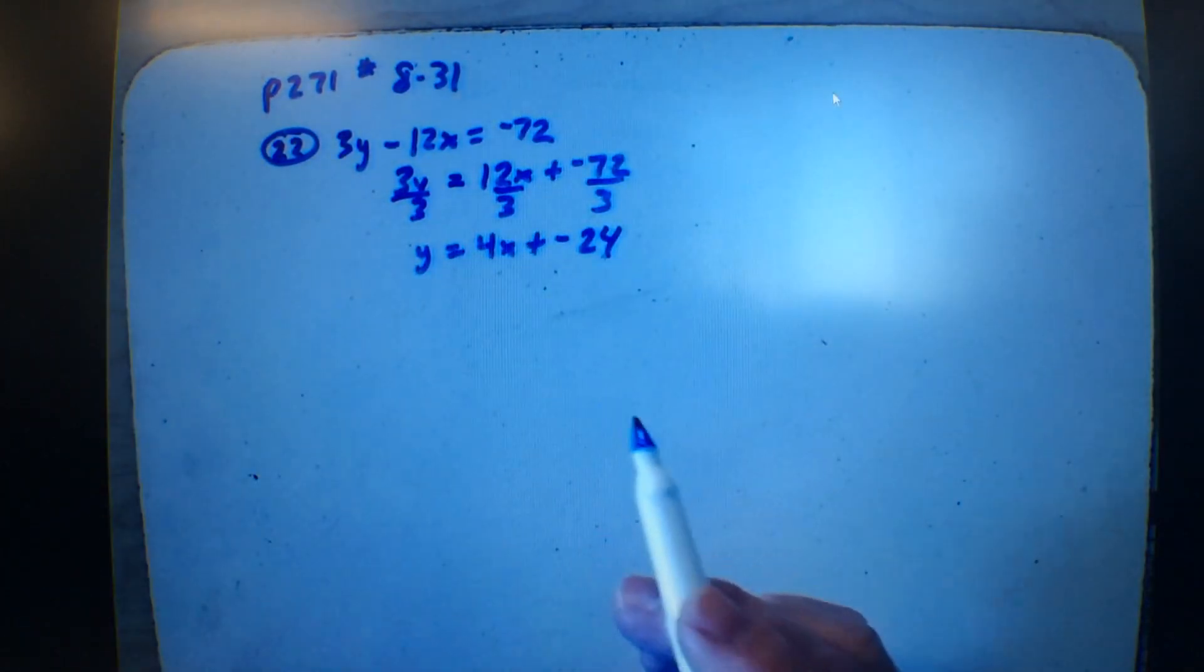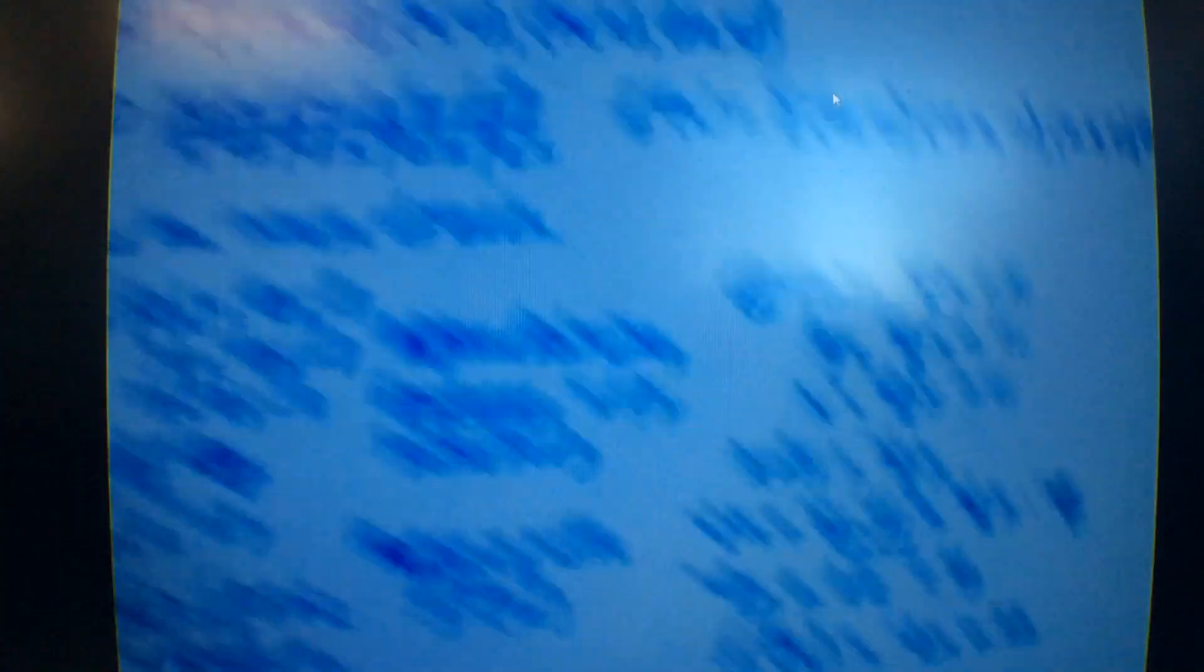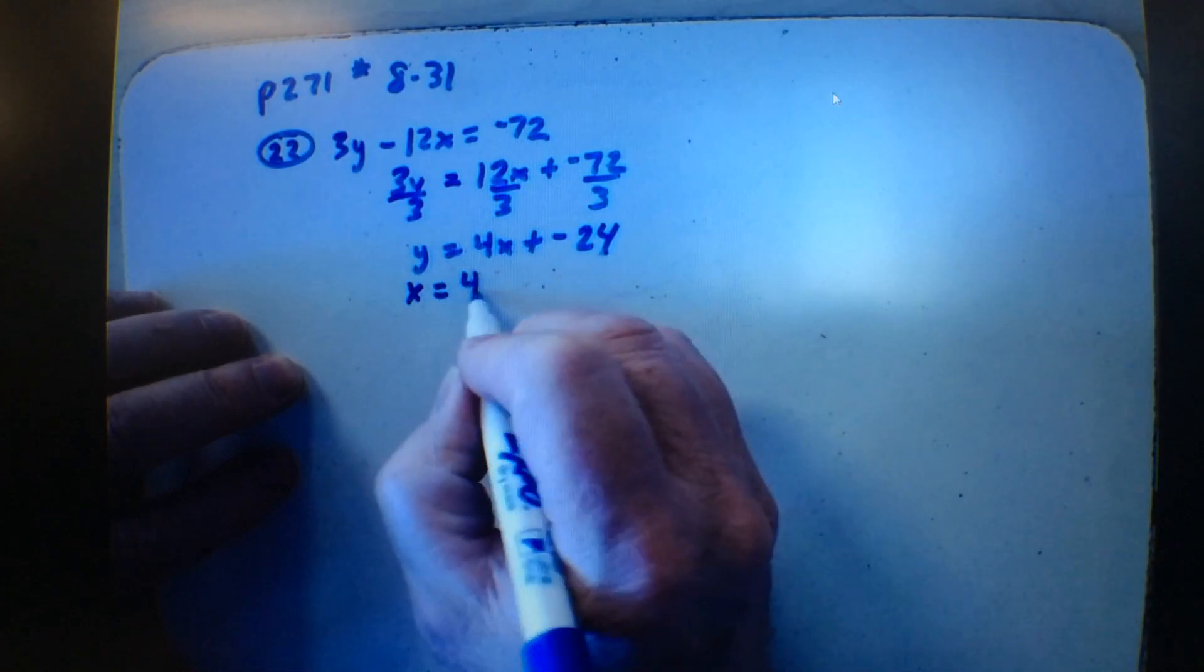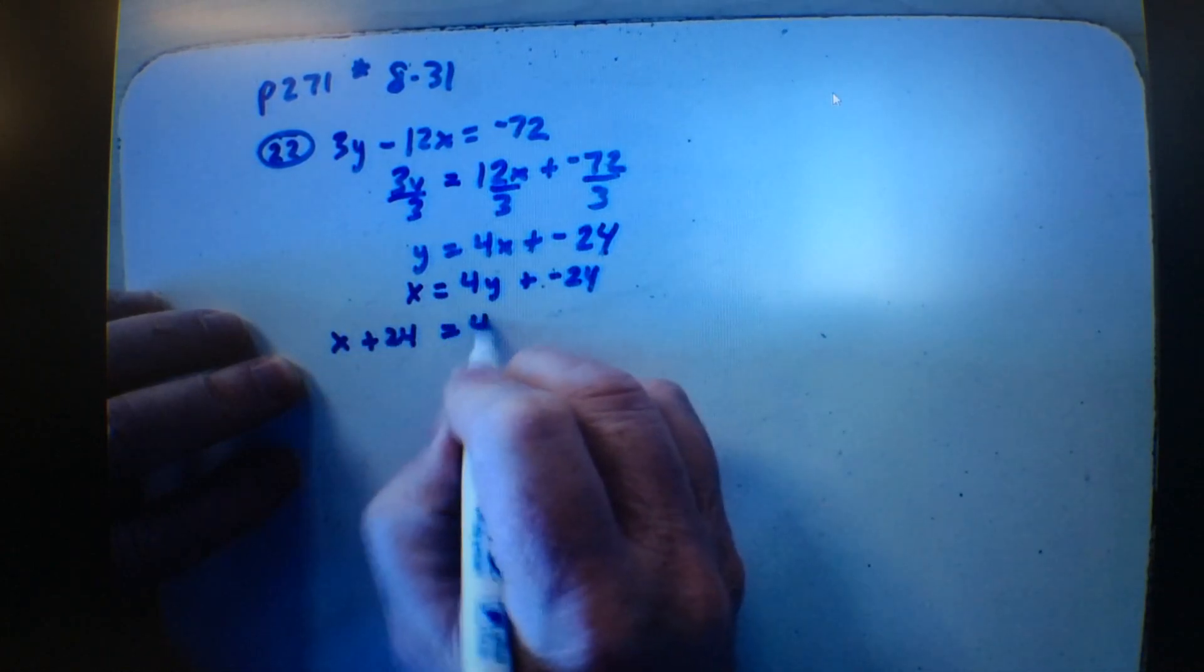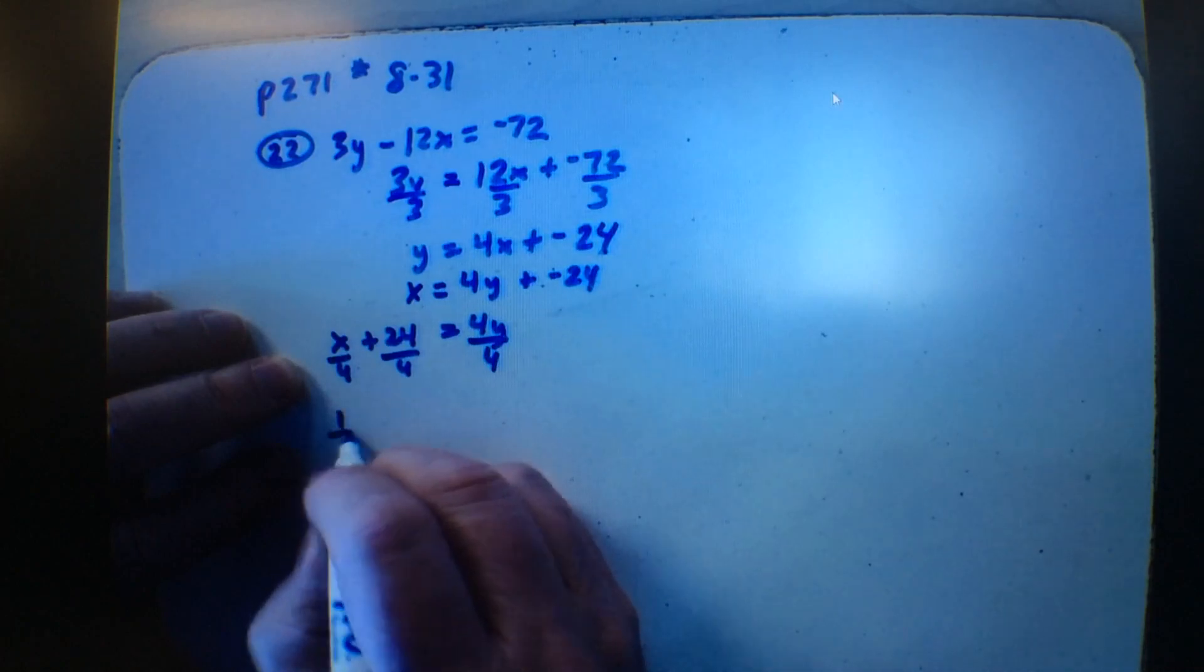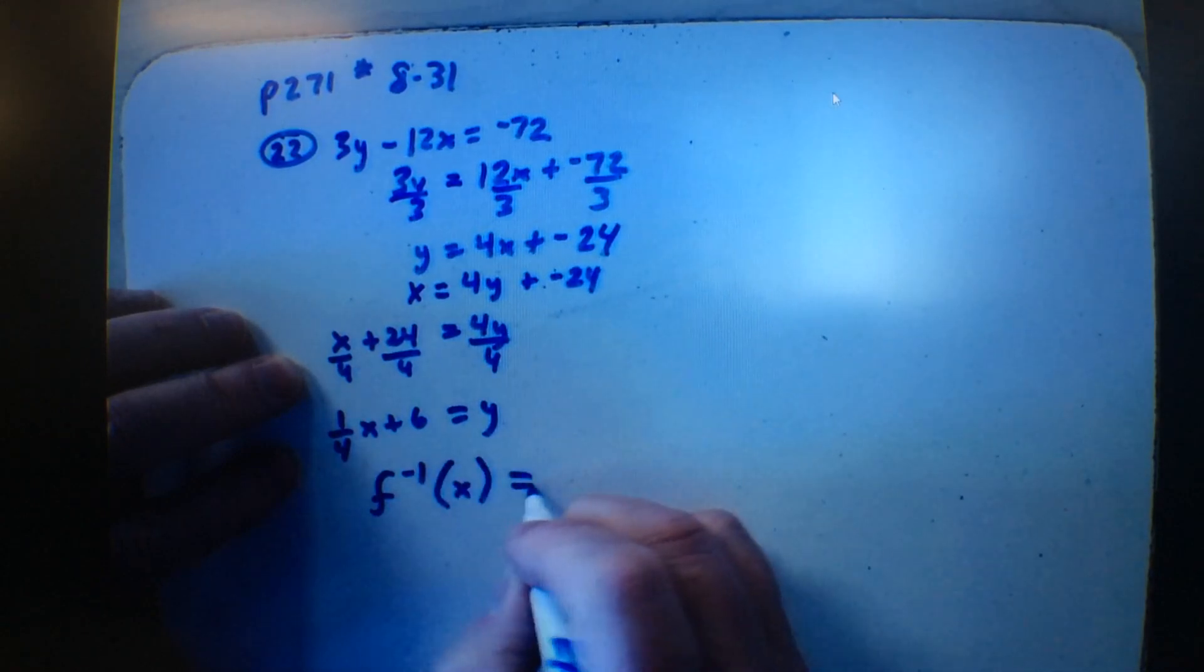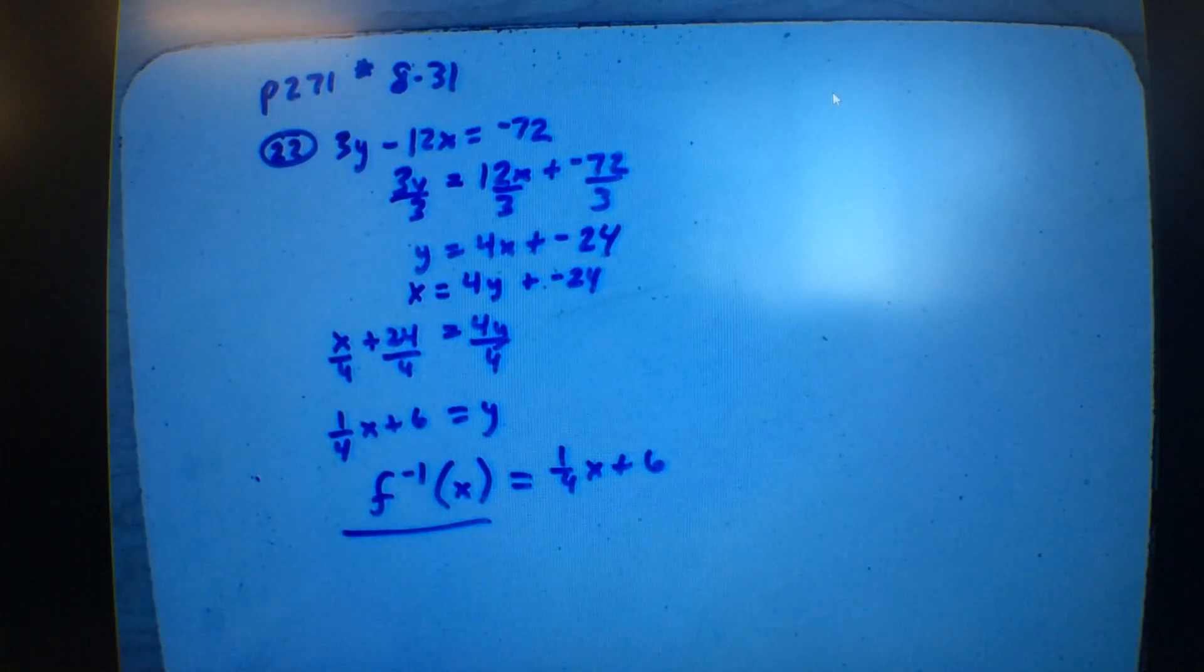Now, here's where you were right here. You know, back here, you were right here. Only, we have a Y instead of an F of X. Is it good that we have a Y? Yeah, because the first step we did was, yeah, we changed F of X to a Y. So we're good. All we got to do is exchange X and Y now. And solve for Y. So I move the 24 over. Becomes positive. And I divide by 4. And I get, I'm going to write it as 1 4th X plus 6 equals Y. And then I'm going to write it like this. The inverse equals 1 4th X plus 6. I like the inverse on the left side. Okay? You see how to do that?